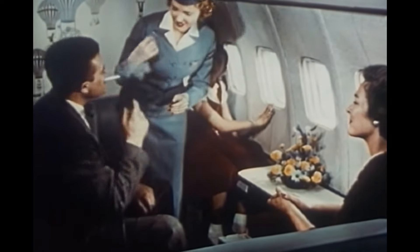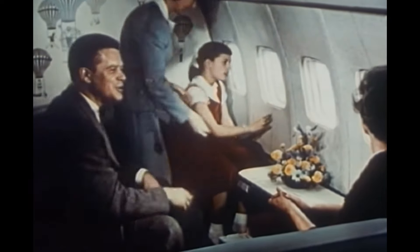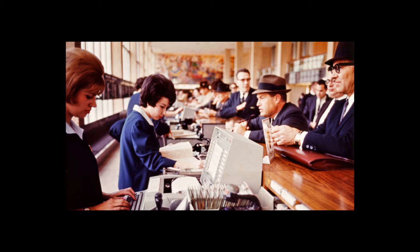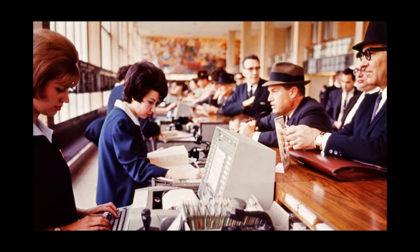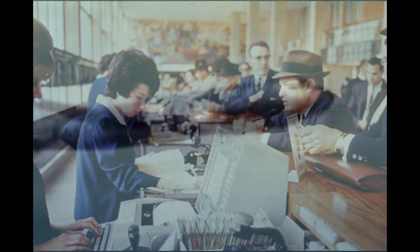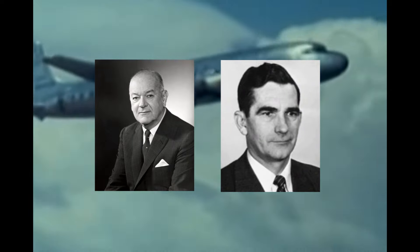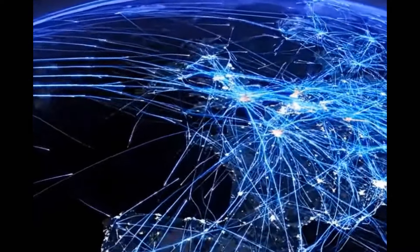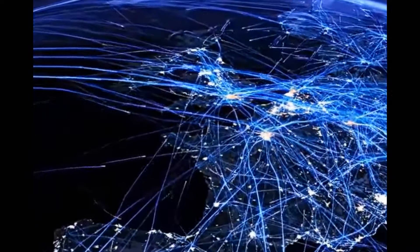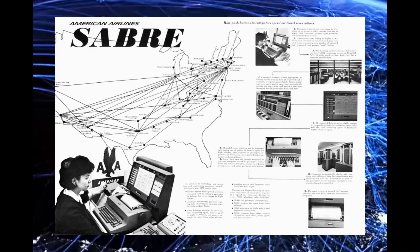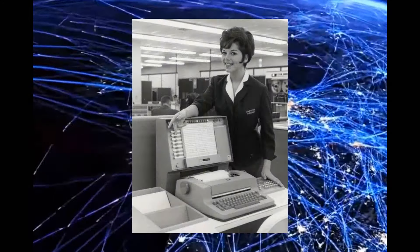When Bézier was developing his curves, most people hadn't even seen a computer, let alone imagined they would ever work with one. The one place they might have encountered one was at an airline ticket counter. In 1953, two Smiths happened to sit next to each other on a plane: C.R. Smith, president of American Airlines, and R. Blair Smith, CEO of IBM. They got to talking about the complexity of airline ticketing — thousands of passengers traveling on hundreds of flights each day — and IBM introduced Sabre: Semi-Automated Business Research Environment. Originally, Sabre consoles were attached to electric typewriters, but were soon replaced with early CRT monitors. Sabre is still in use today.